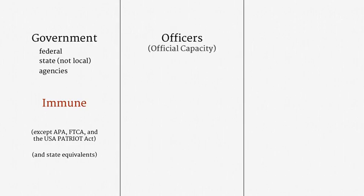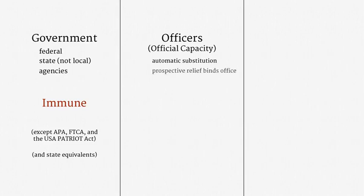A plaintiff can also sue individual government officers, all the way up to the President of the United States. One way those officers can be sued is in their official capacity — that is, sued as the current holder of a specific government office. One key benefit of suing in this way is that if the holder of that office changes, the new officer is automatically substituted. So, for example, if you've sued the President and a new President is elected, the new President is just swapped into the lawsuit — you don't need to start from scratch. The other key benefit of official capacity litigation is that prospective relief binds the office, not just the particular officer. Future officeholders have to abide by court orders.